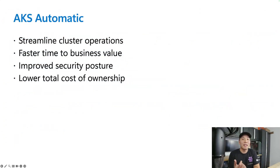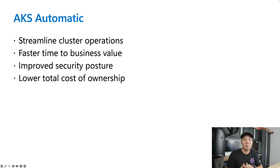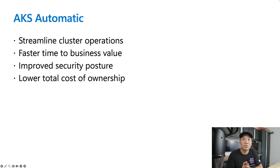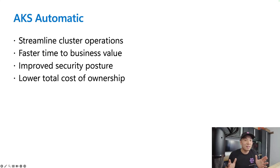AKS Automatic is a new offering of AKS that comes with many of these components installed, configured, and managed by default. Its primary goals are to help you streamline your cluster operations, enable you to deliver business value much quicker while adhering to security best practices, and lower your total cost of ownership over time. When you create a new AKS Automatic cluster, you get a cluster that is ready to go with many components you would normally install and manage yourself.